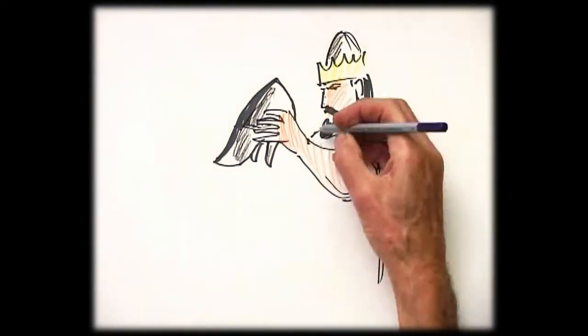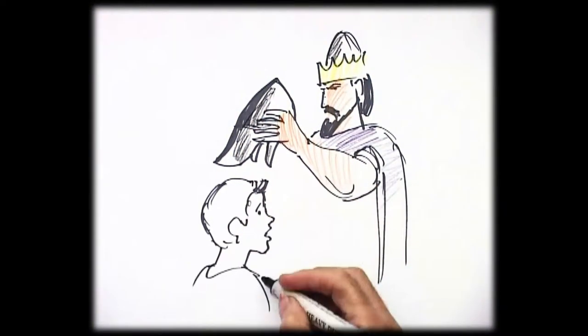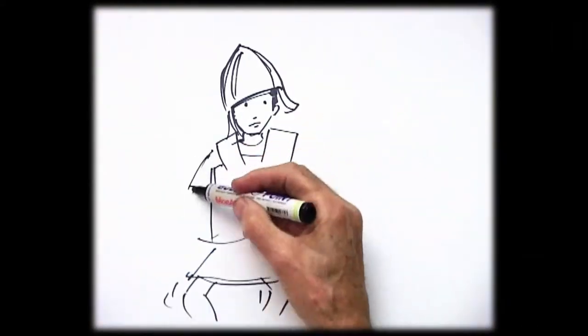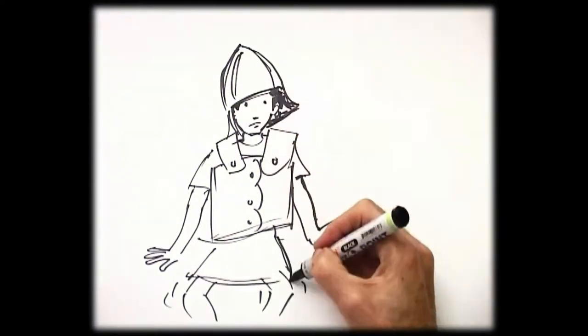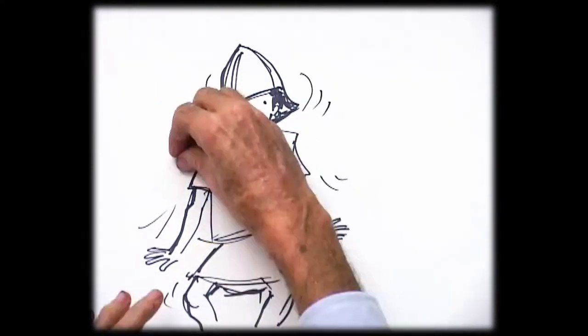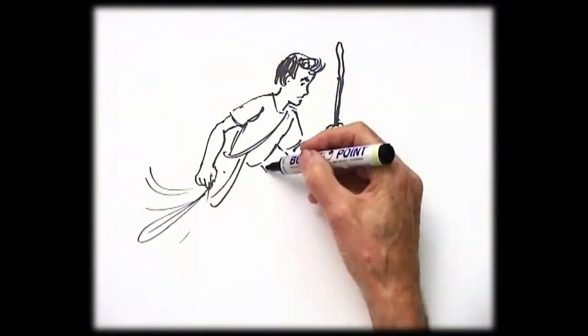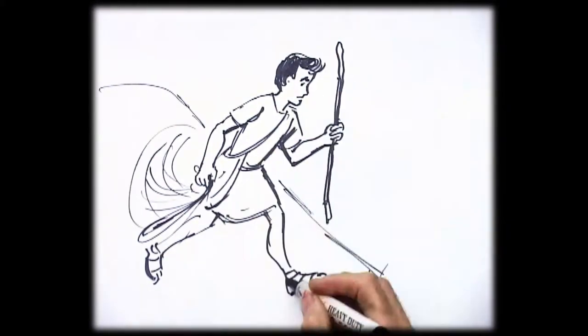Saul had his own military clothes and armor put on David, and he gave David a bronze helmet to wear. David strapped on a sword and tried to walk around, but he was not used to wearing those things. I can't move with all this stuff on. I'm just not used to it. David took off the armor and picked up his shepherd's stick.